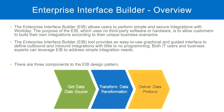Get data, transform data, deliver data — these are the three components in an EIB design pattern. What we are going to do is configure these three steps: where are we going to get the data from, do we need transformation — if yes, configure that, if no, leave it blank — and then how are we going to send the data to an external system. Once we do these three steps, our EIB is ready and we start exchanging information from Workday with an external system.